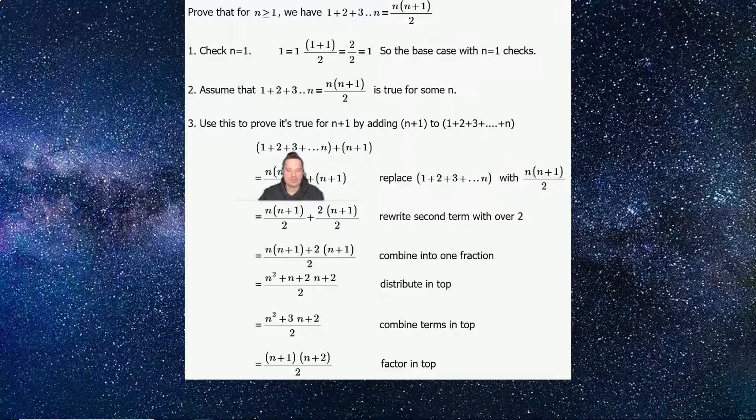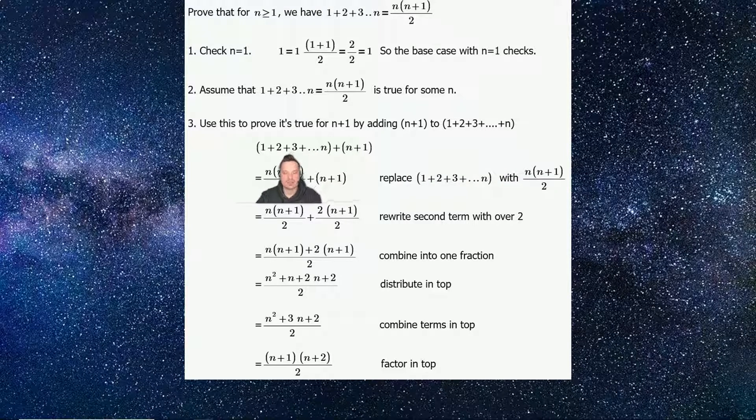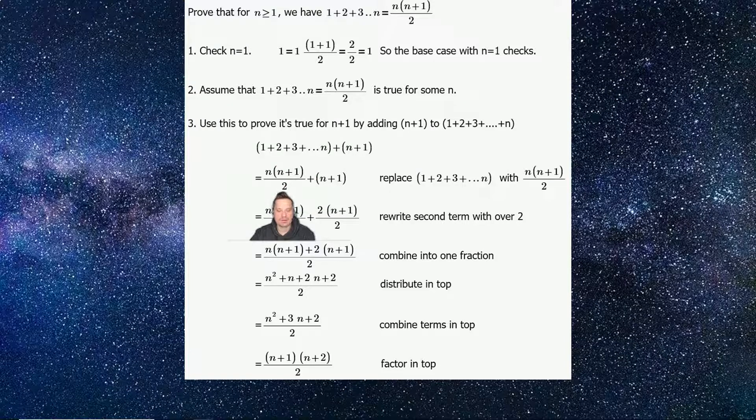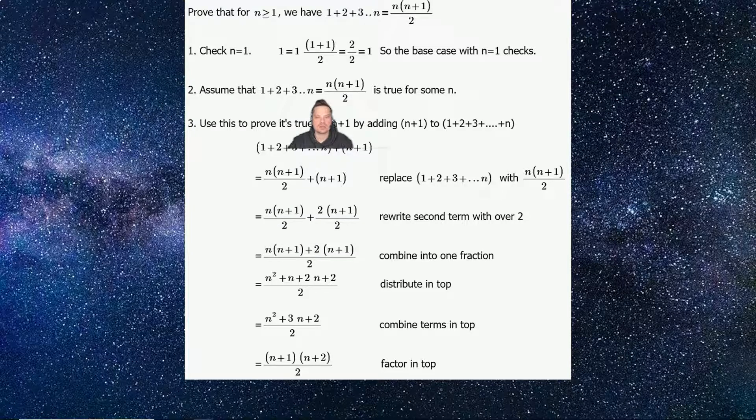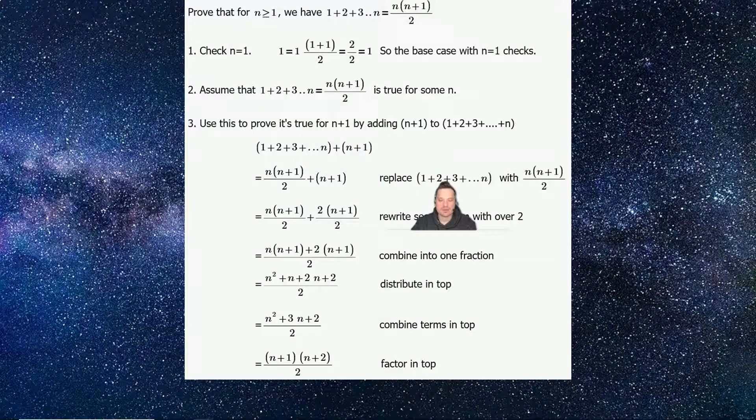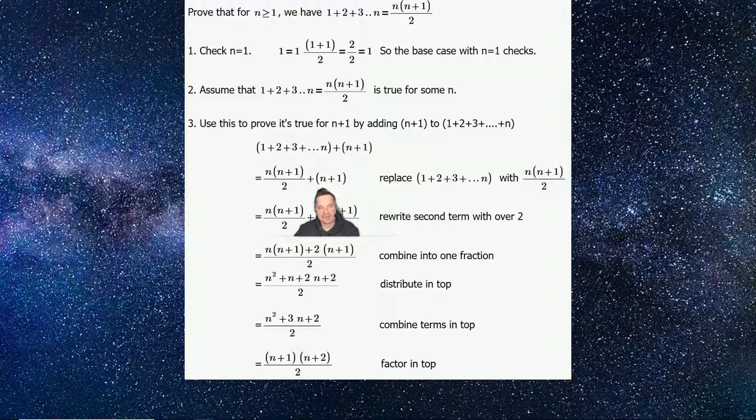So let's work this out. This part above my head, that can be replaced with n times n plus 1 over 2. Where is that coming from? Again, this is because up here, back at step 2, we assume that the two sides are equal, so they can be used to replace each other. So replace this, 1 plus 2 plus 3 plus n, with n times n plus 1 over 2. Keep that n plus 1 attached. After that, it's just really algebra.